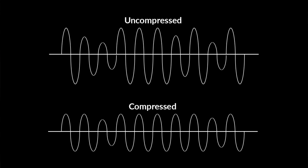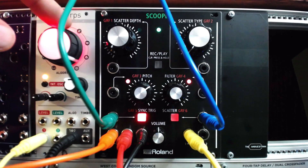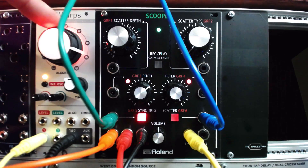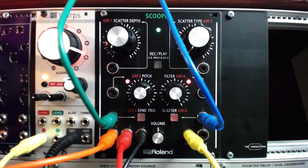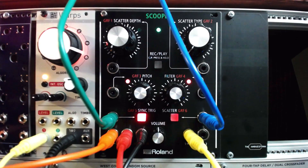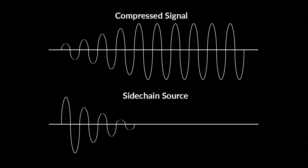On its own, the compressor is fairly powerful, controlling the dynamic range of a signal. But when combined with another new virtual module, the Enveloper — an envelope follower and generator — the compressor can be controlled by a separate audio signal, creating a common effect used in popular electronic music: a sidechain compressor.